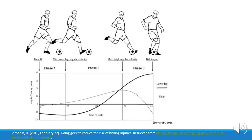This image reiterates those points: during the backswing, the shank's velocity is at its minimum and is negative, then increases as the leg progresses through the swing of the kick, reaching its maximum angular velocity at the point of ball impact at the end of phase three in the figure. The thigh's velocity is also minimal during the backswing, then increases as the leg swings through, reaching its peak angular velocity right before knee extension at the beginning of phase three.